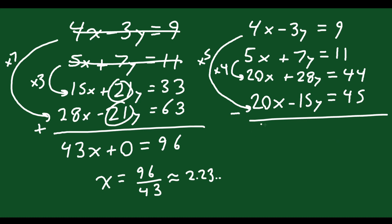And now I'm going to subtract, right? Because they're both positive 20x, so I'm just going to subtract. So 20x minus 20x is 0. 28 minus negative 15, that's like adding. So you get 43y. And then 44 minus 45, you get negative 1. Divide both sides by 43. Y is equal to negative 1 out of 43, which is approximately equal to negative 0.023 if you want the approximate answer.